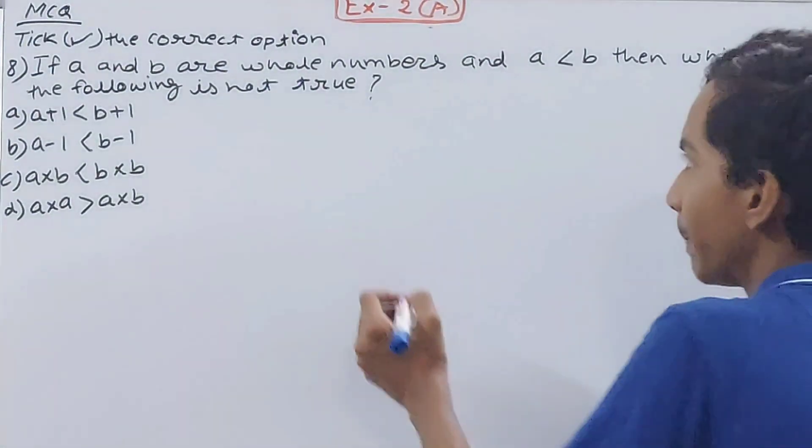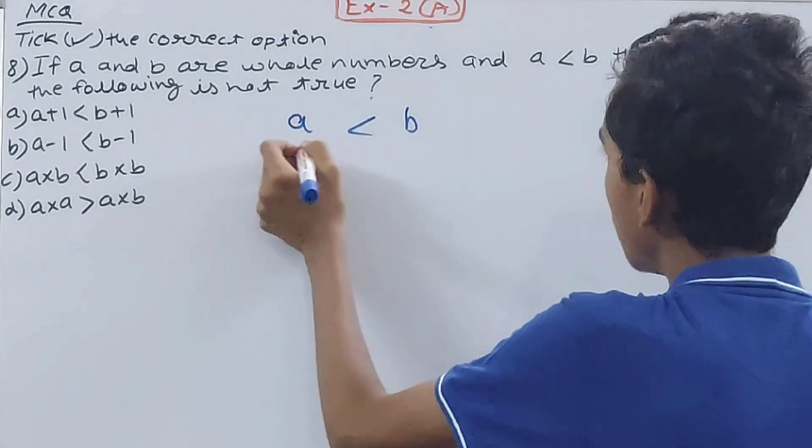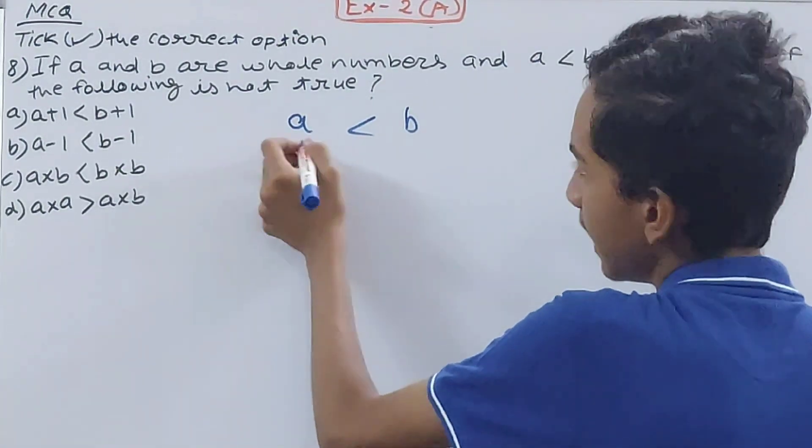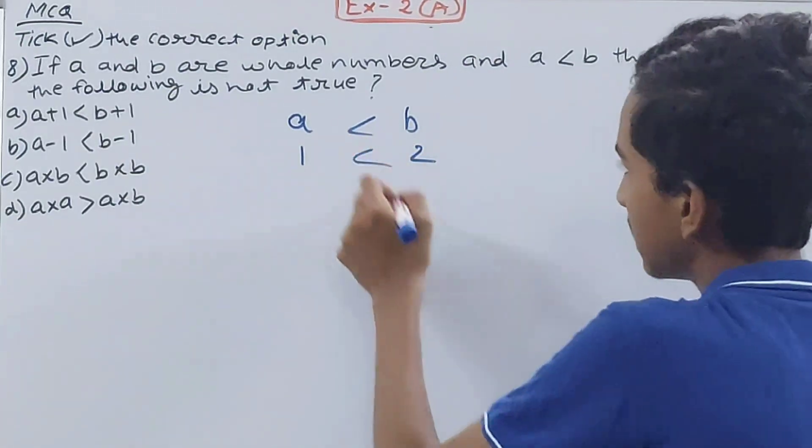It says a and b are whole numbers. First condition, let's assume the value of a and b. A is less than b. Let's say a is 1 and let's take b as 2. So 1 is less than 2, so condition fulfilled, both are whole numbers.